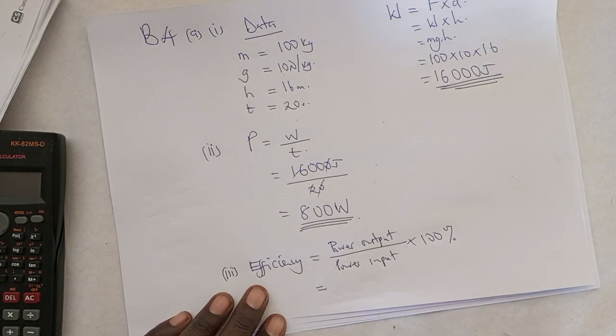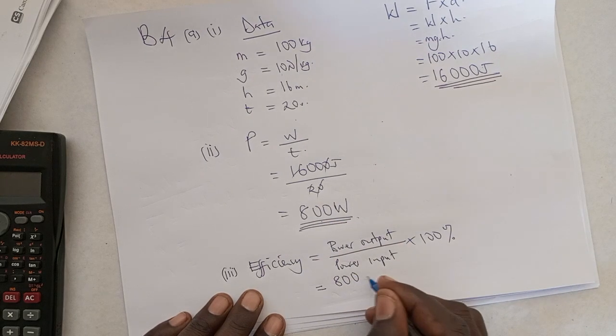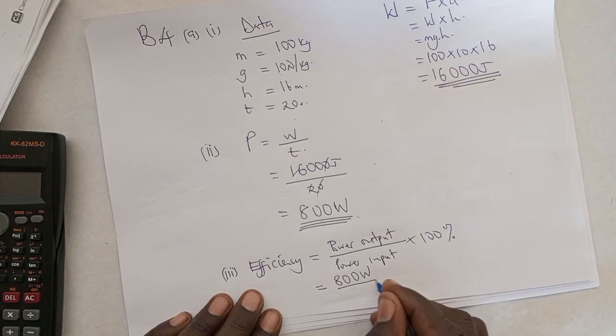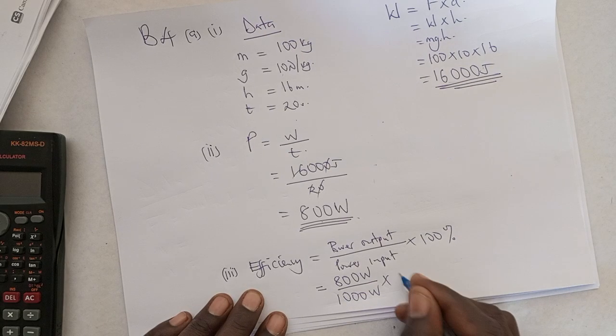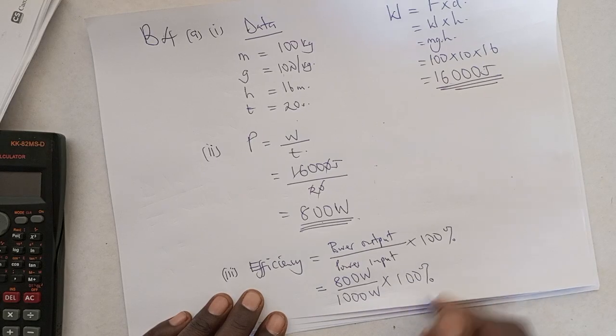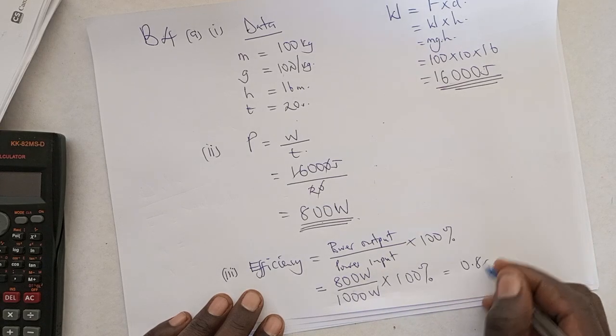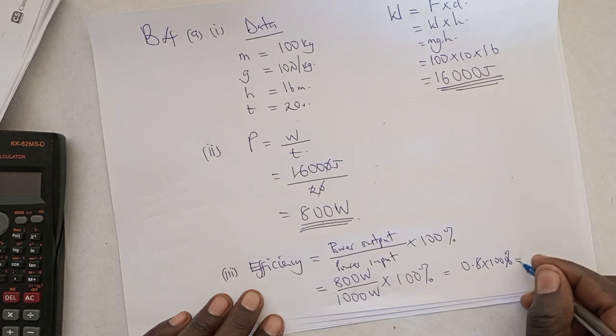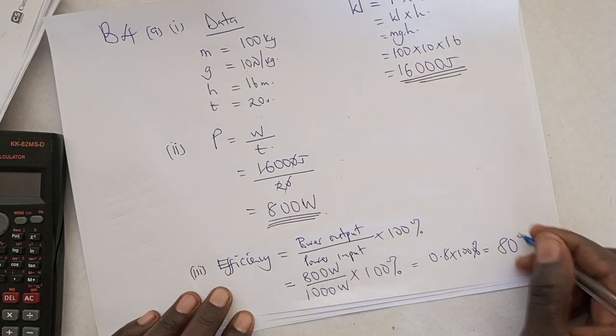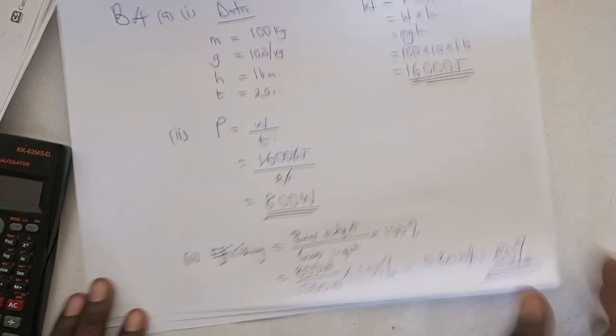What have we found here? It is 800. This is our power output. And the power input is 1,000 watts. Multiply this by 100%. If we do the math here, we discover that it will be 0.8 times 100% and the answer would be 80%. That is the efficiency of the machine.